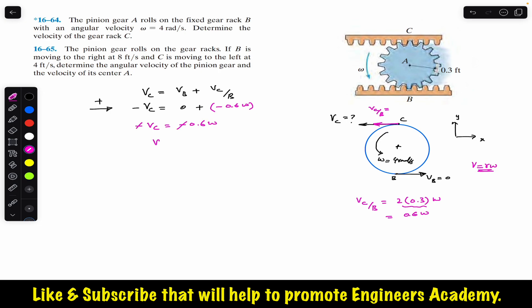So minus vc equals minus 0.6·omega. The negative signs cancel, and substituting omega equals 4 radians per second, we get vc equals 0.6 times 4 equals 2.4 feet per second in the negative x direction. This is the solution to the first problem.